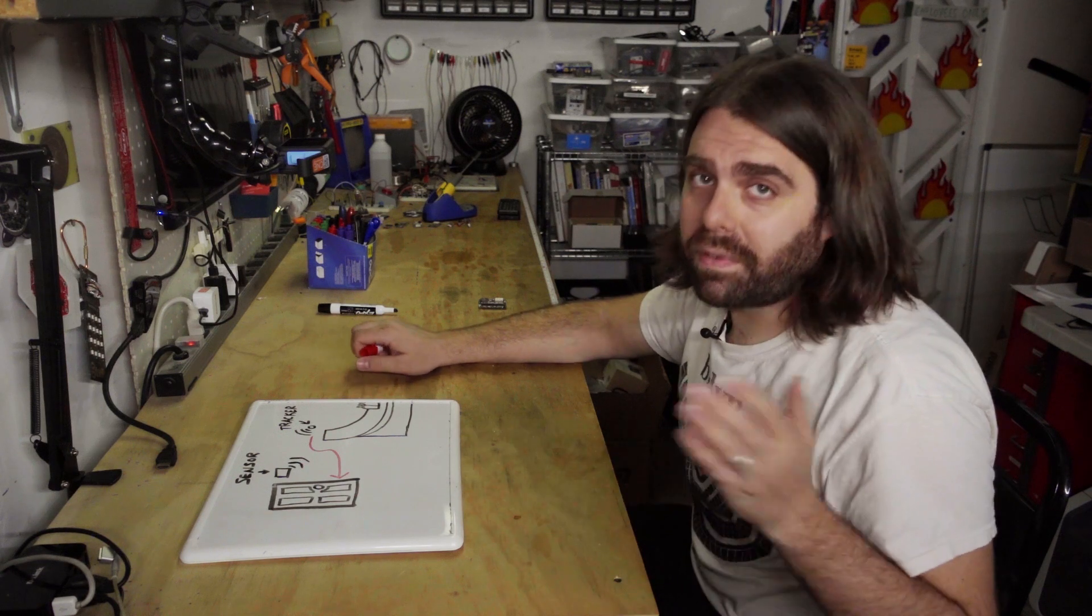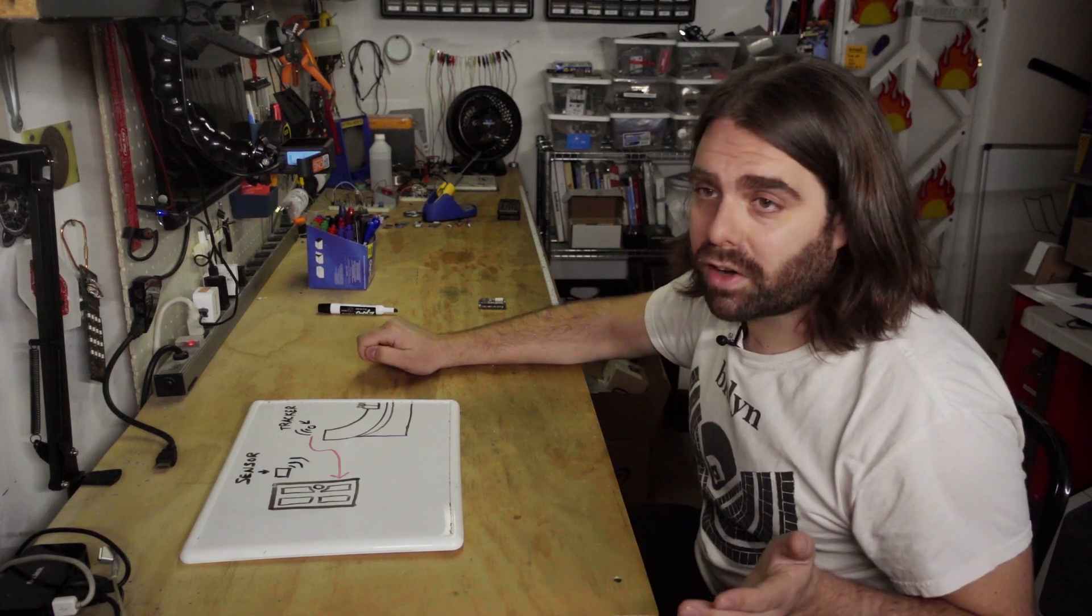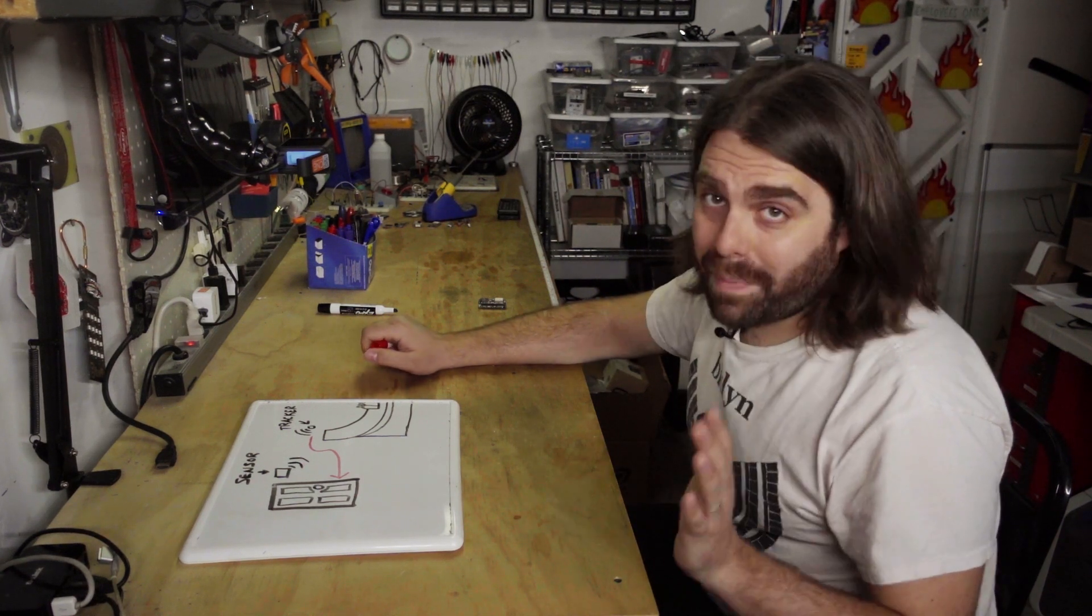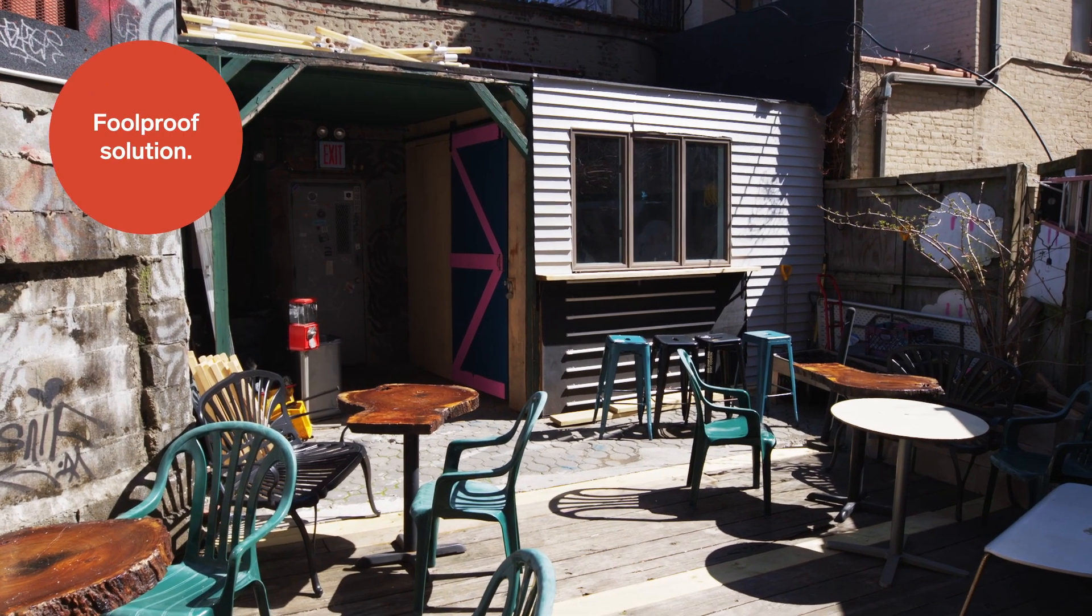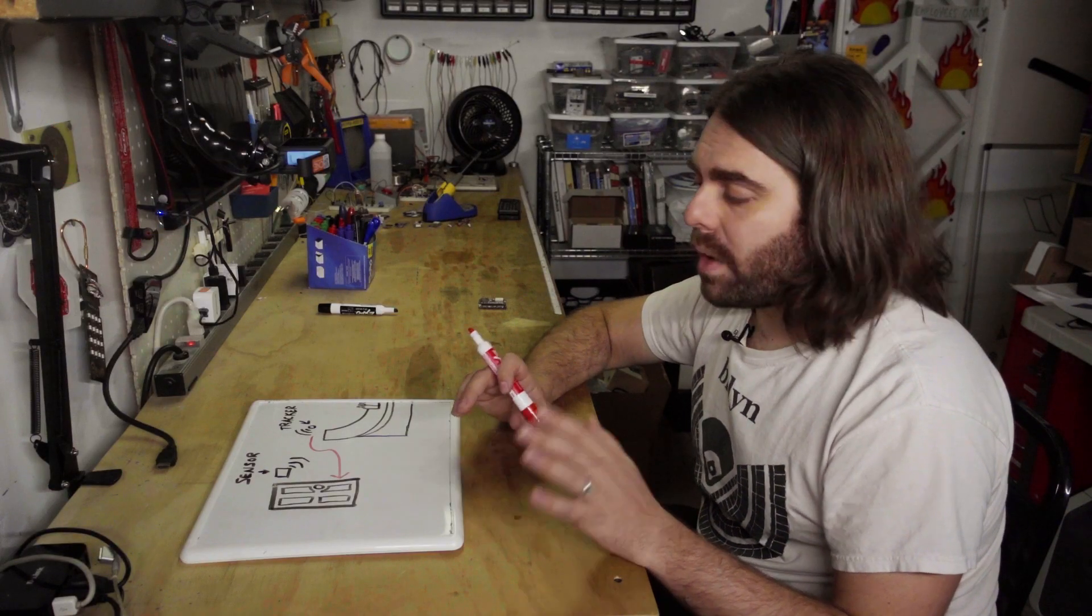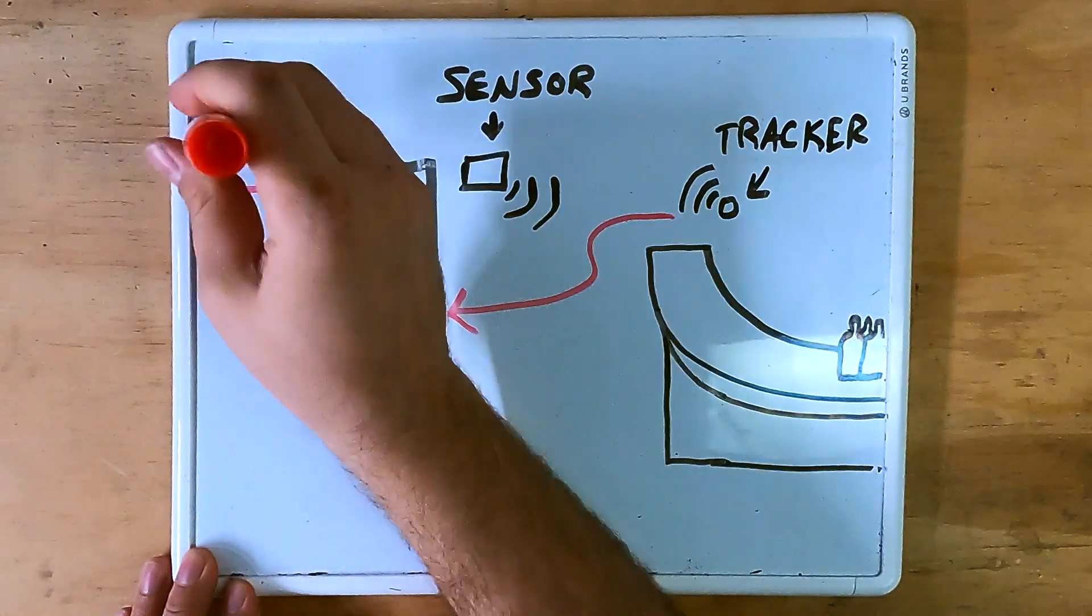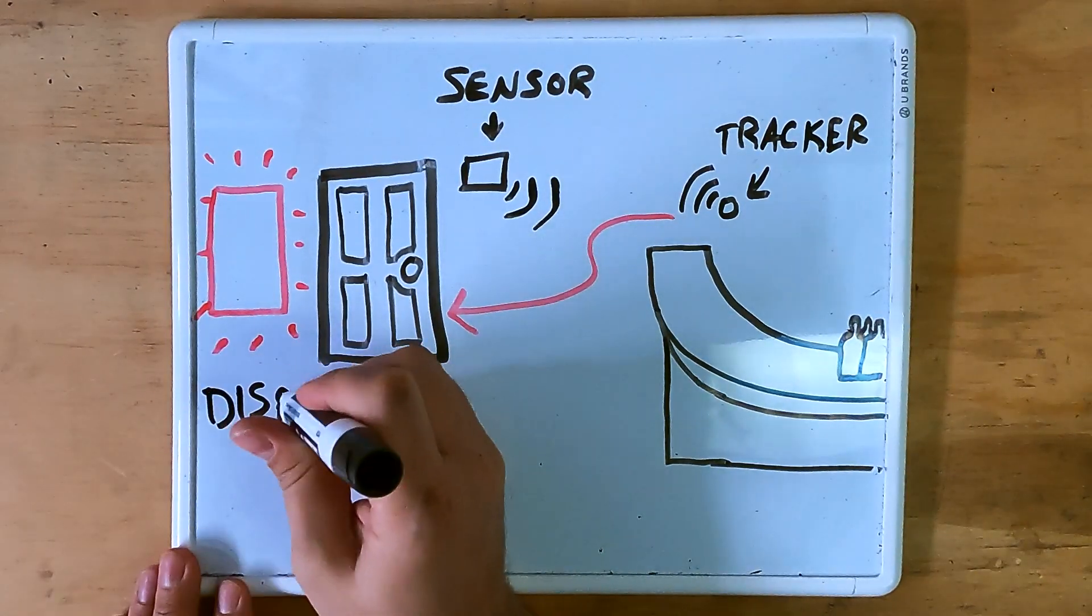I know some of you might be thinking, what if someone wants to go outside to have a cigarette? Well, we have a backyard. They can go out there instead. Finally, when the sensor goes off, I want to build some kind of display that does whatever it needs to do to stop them dead in their tracks.